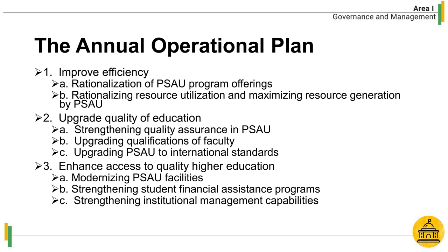The annual operational plan focuses on the following: first, improve efficiency; second, upgrade quality of education; and third, enhance access to quality higher education. The plan spells out the goals, objectives, thrusts, strategies, programs, responsible units, performance indicators, needed budget, and quarterly targets.